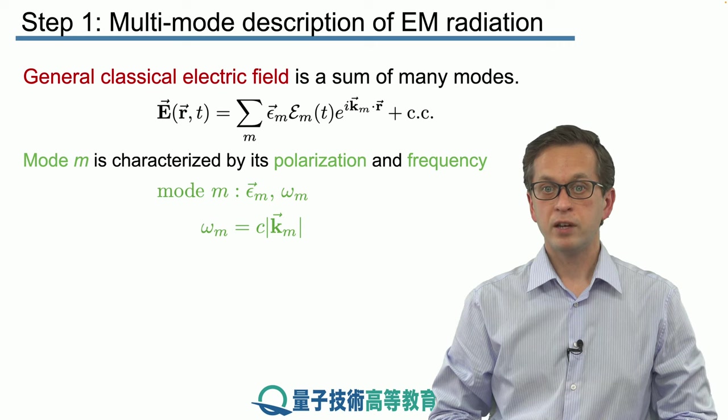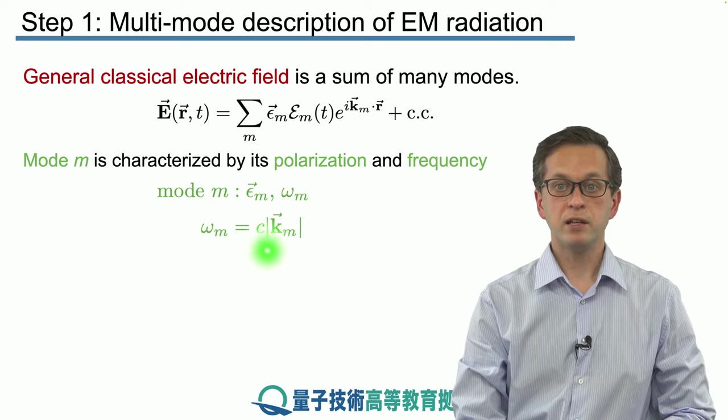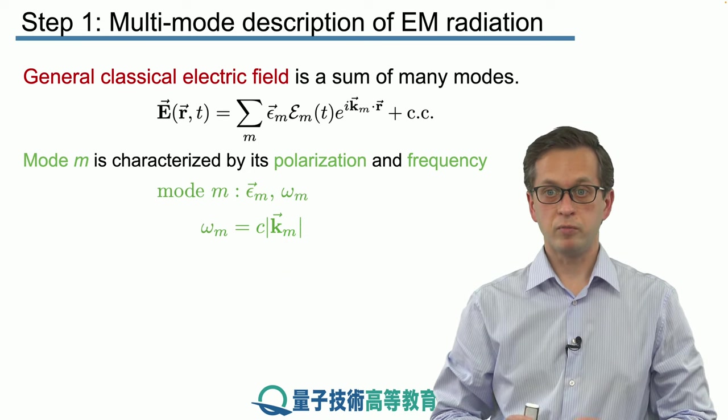Omega m is related to the k vector in the following way where omega is equal to c the speed of light times the magnitude of the k vector m for that mode m.